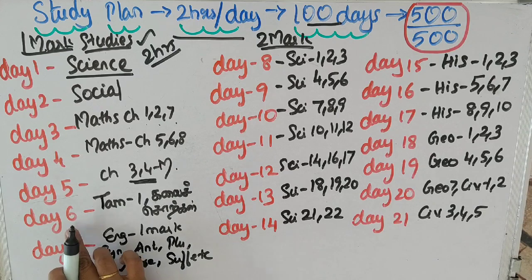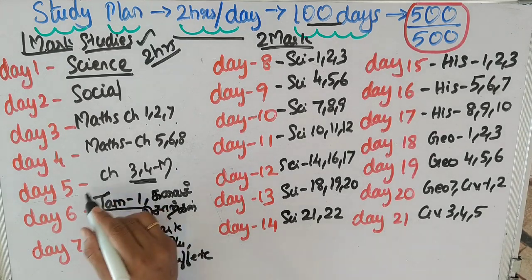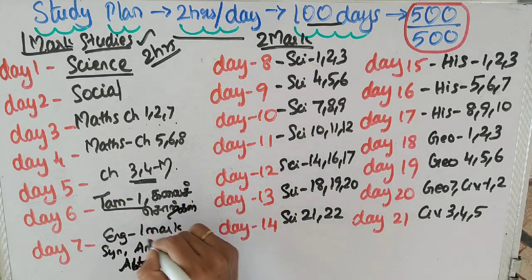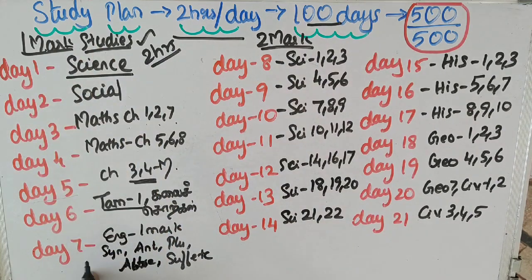On day 7, you have to spend 1 mark - that's covering synonyms, antonyms, plurals, abbreviations, and suffixes.